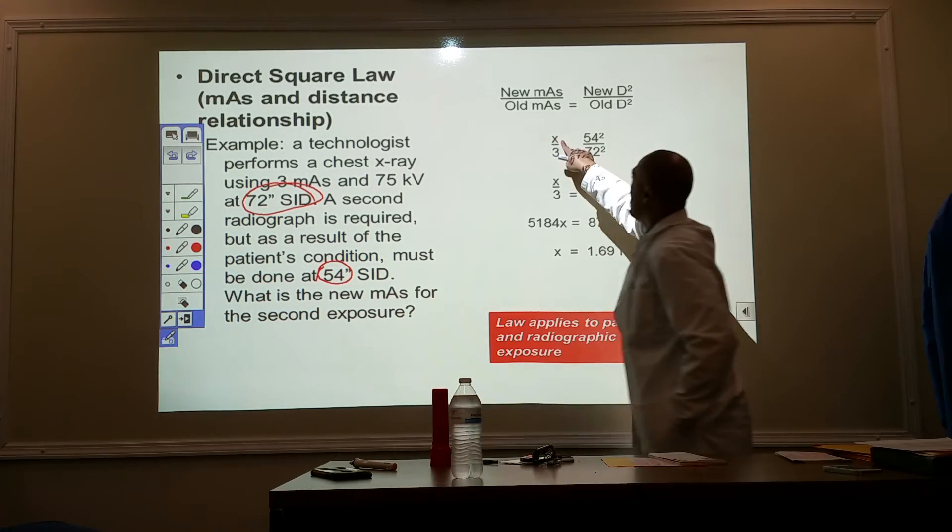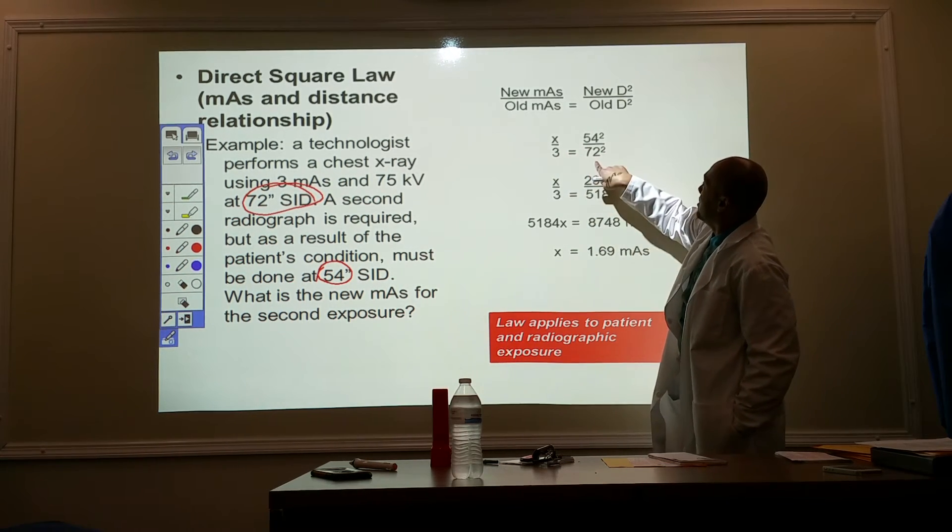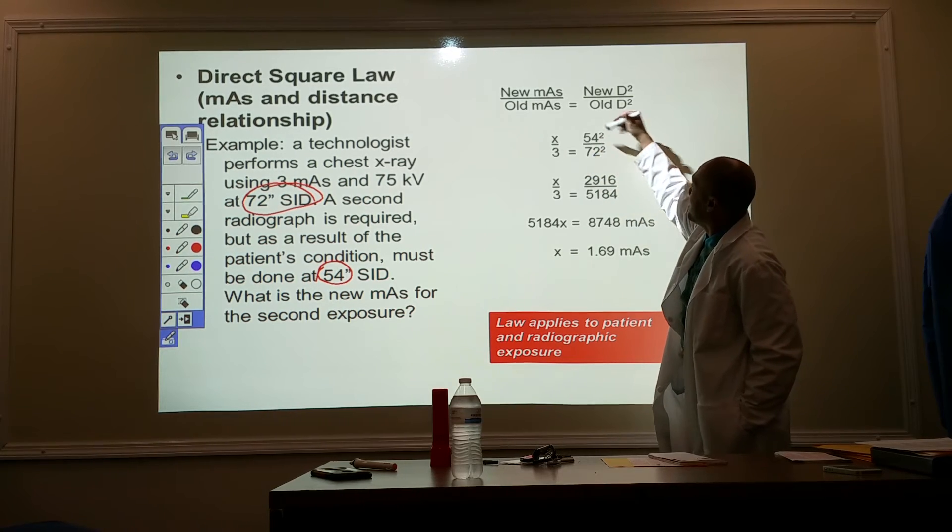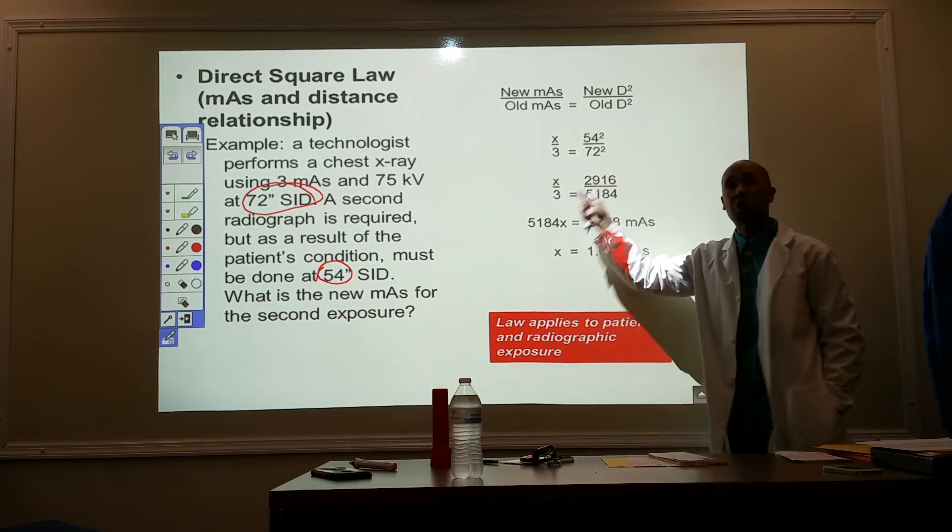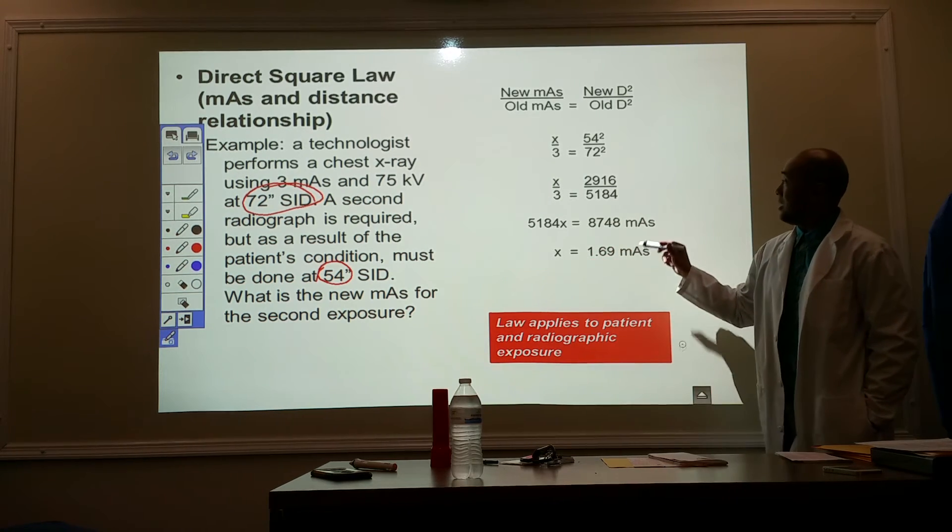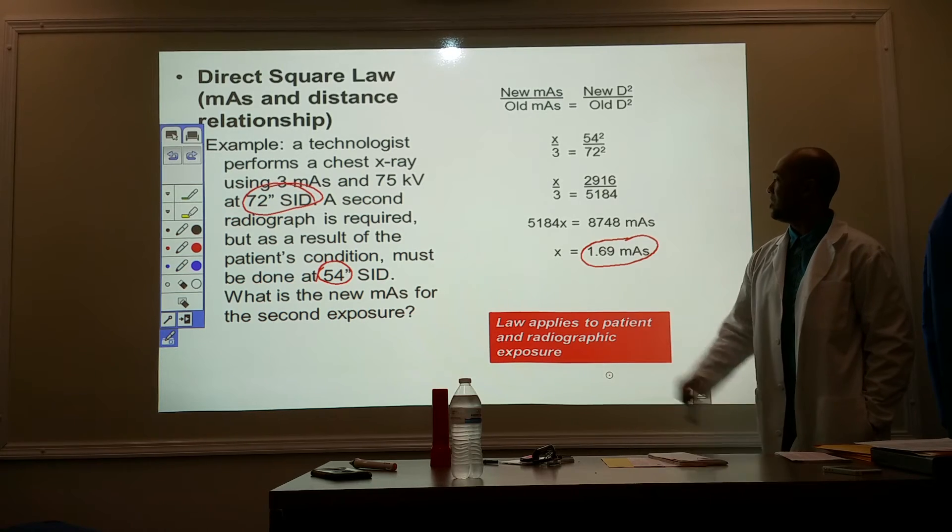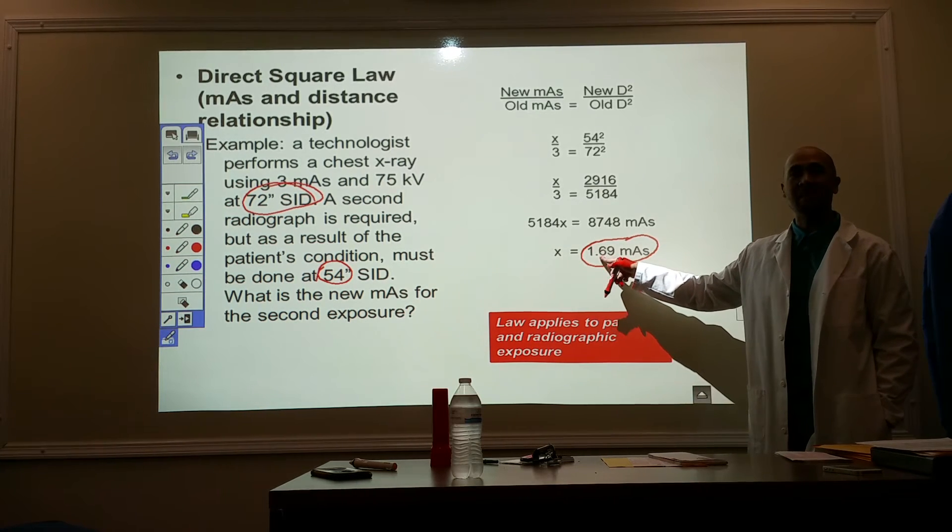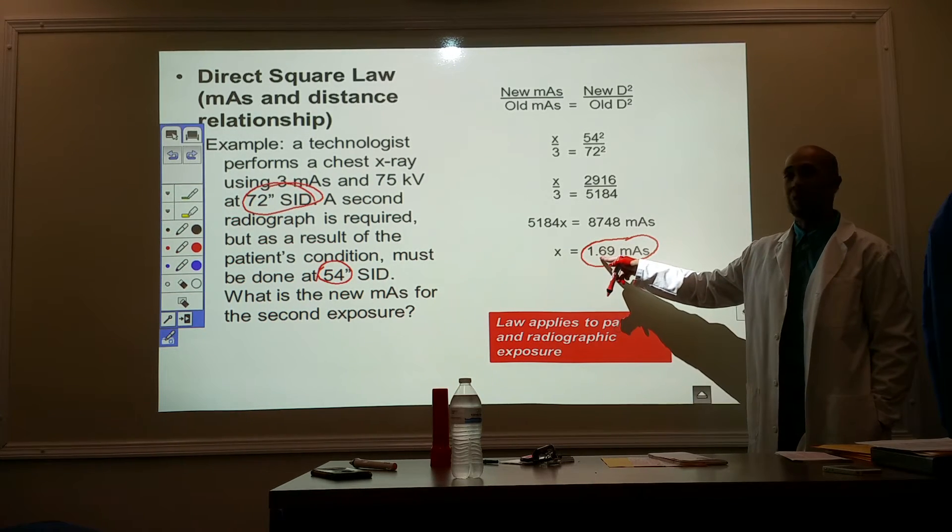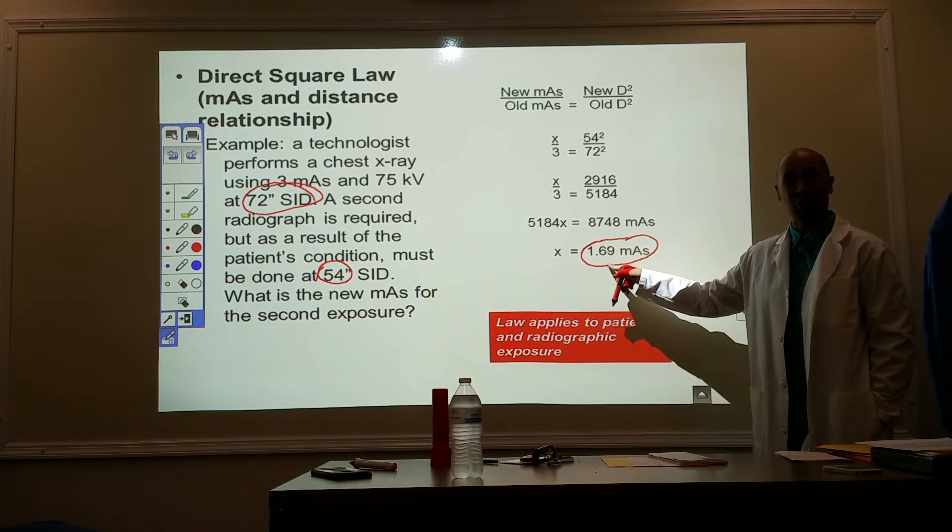All right. So, let's plug this in. New mAs. This is what I'm looking for. Old mAs at 72 inches. And this is the distance. My new distance squared. Again, square them before you cross, multiply, and divide. Once I solve for x, at 54 inches, I'm going to be using 1.7 mAs. 1.7 mAs. Makes sense, right? I'm closer, so my technical factors should be less.